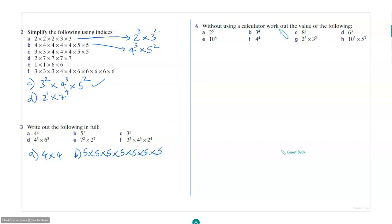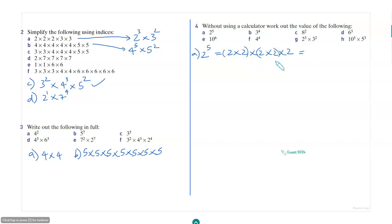Without using a calculator, work out the value of the following. So 2 to the power of 5 will be 2 times 2 times 2 times 2 times 2. You can group it: 2 times 2 is 4, then 4 times 4 times 2, so that's 16 times 2, which is 32.